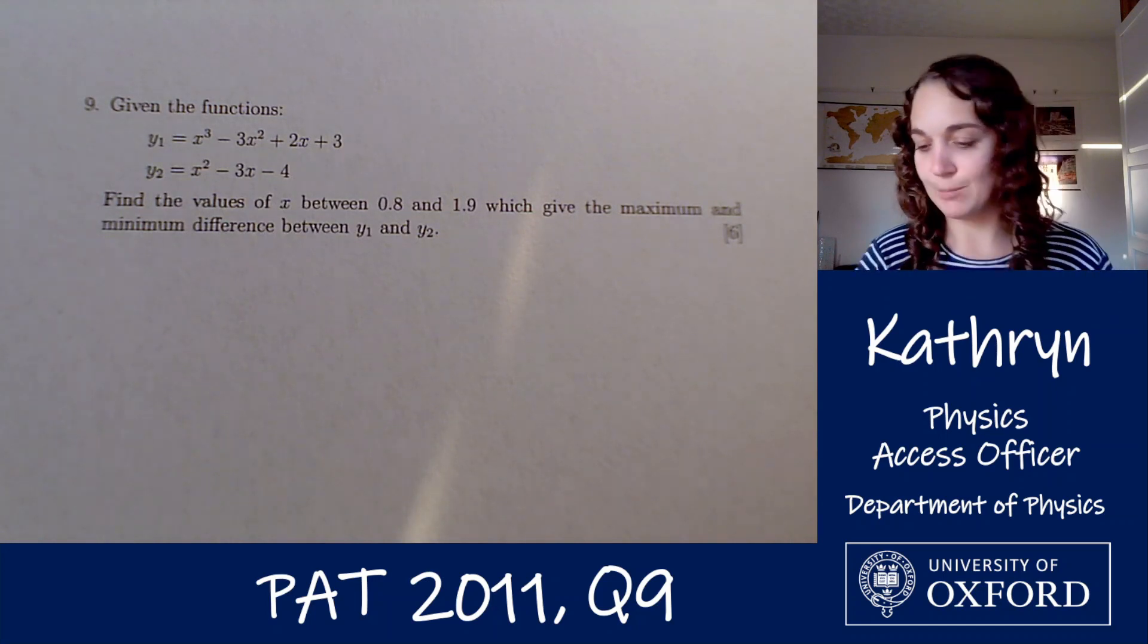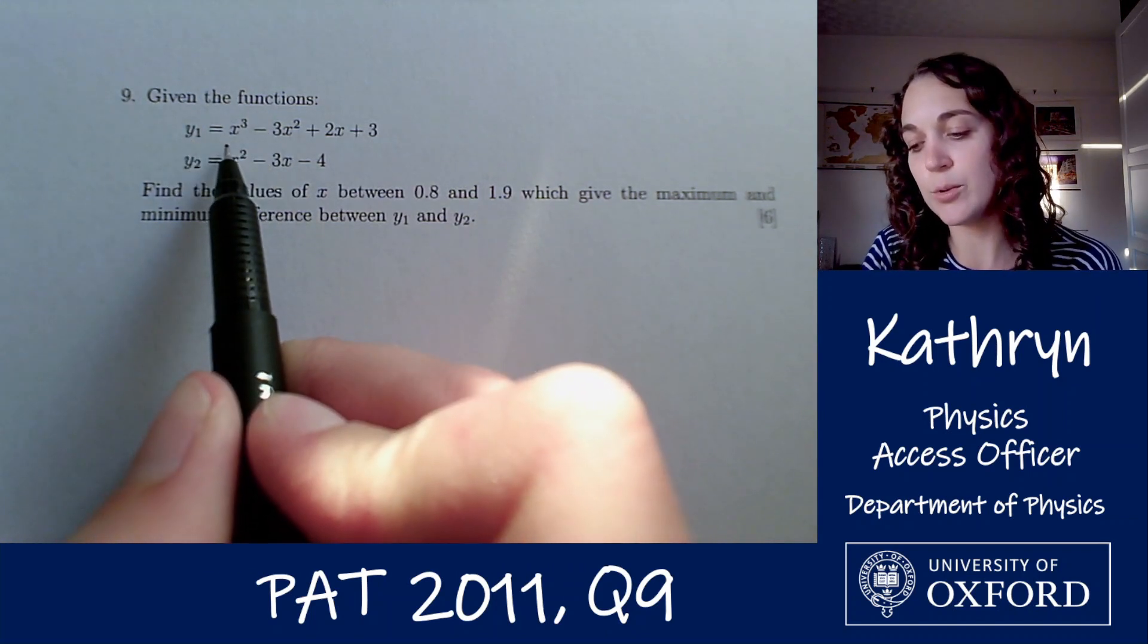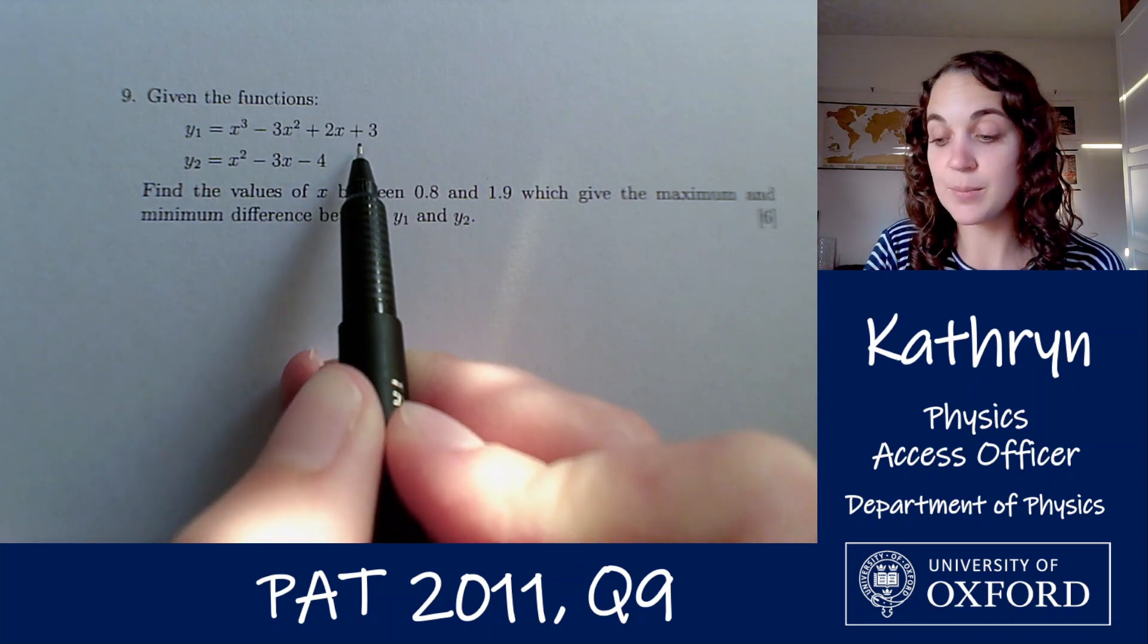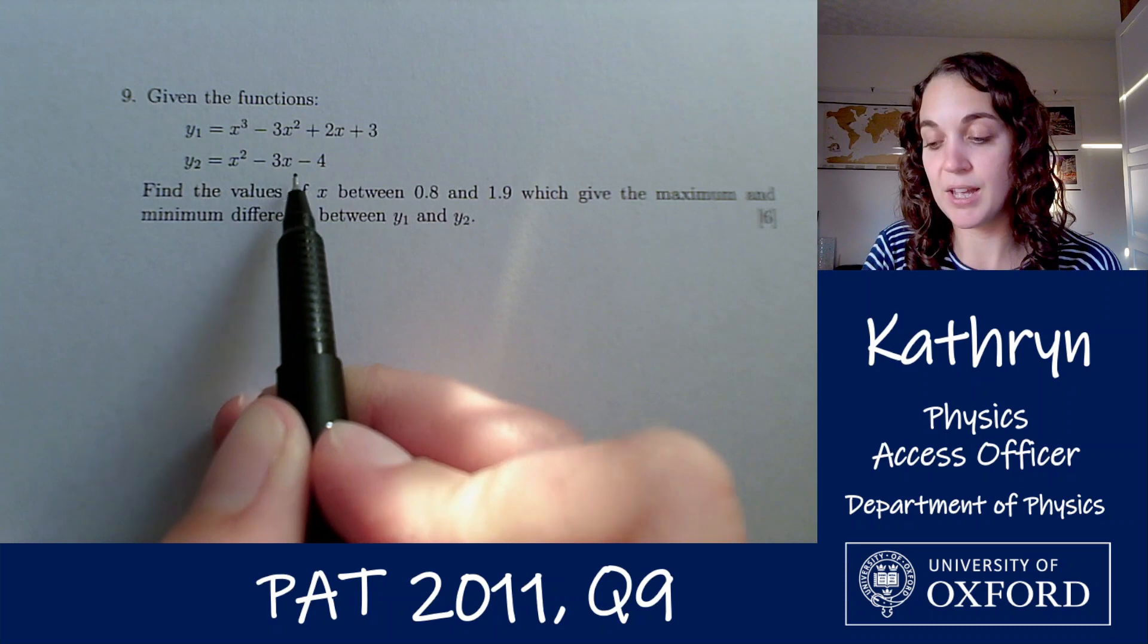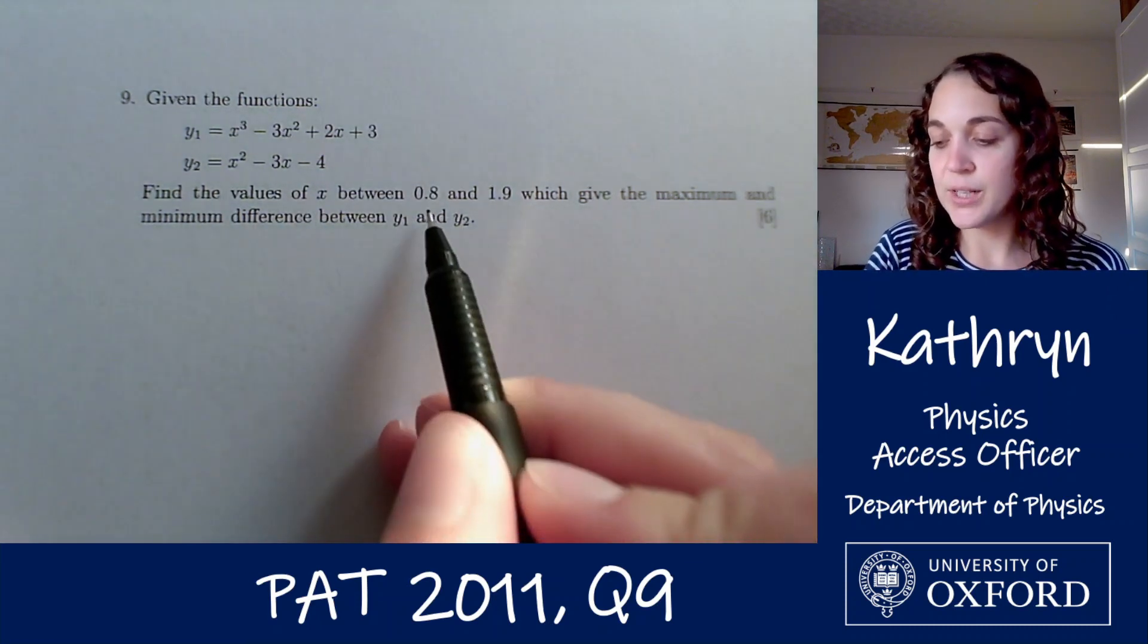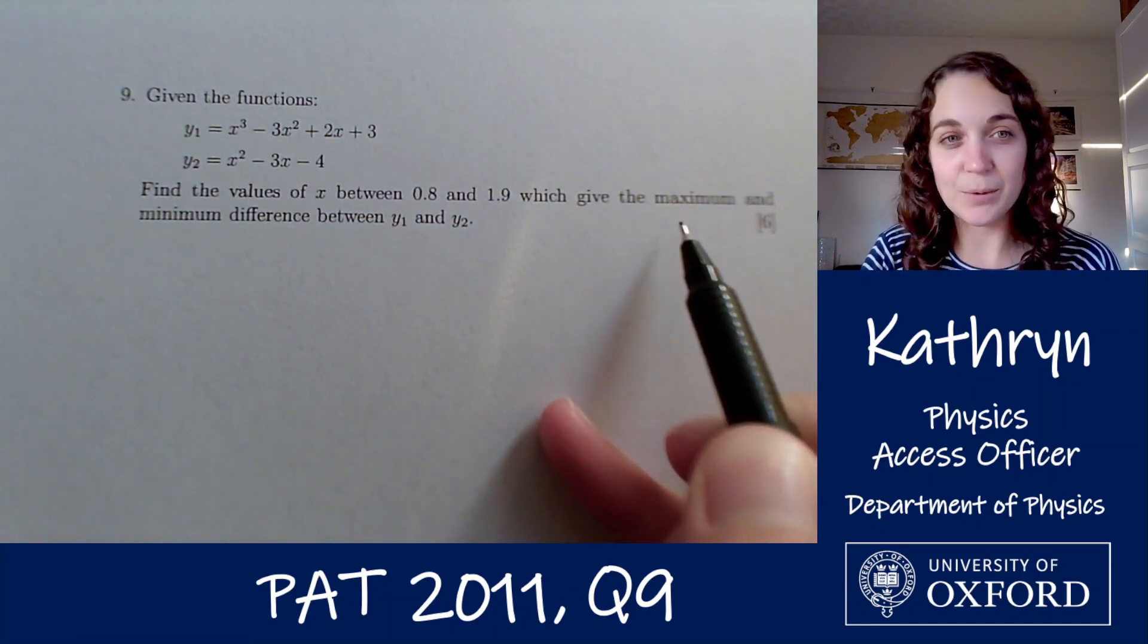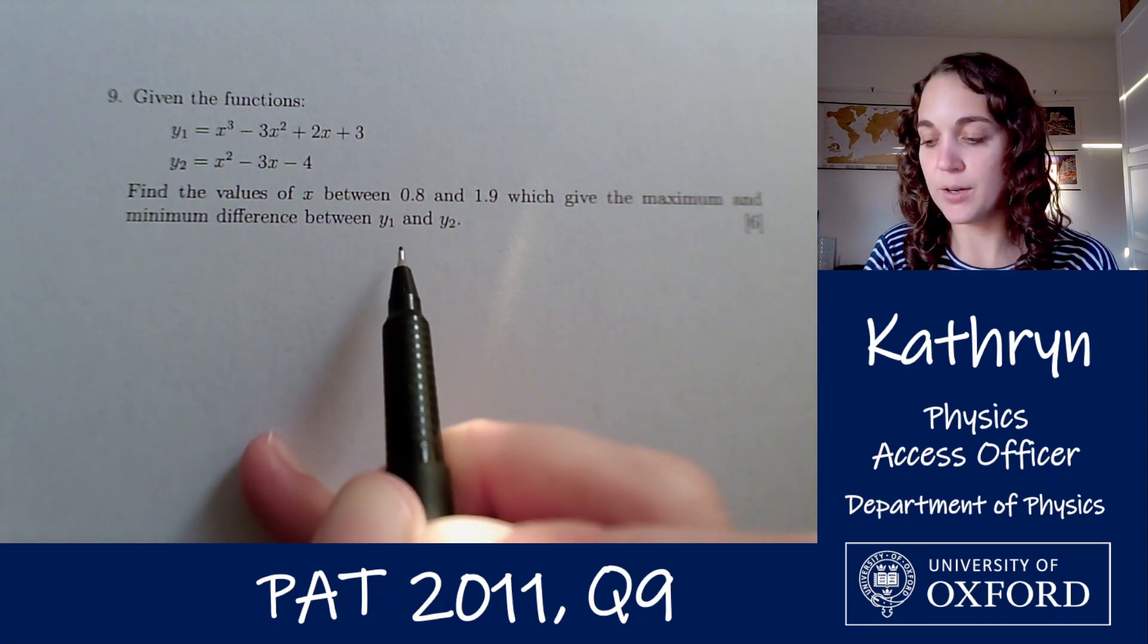So what does it say? It says given the functions y1 equals x cubed minus 3x squared plus 2x plus 3 and y2 equals x squared minus 3x minus 4, find the values of x between 0.8 and 1.9 which give the maximum and minimum difference between y1 and y2.